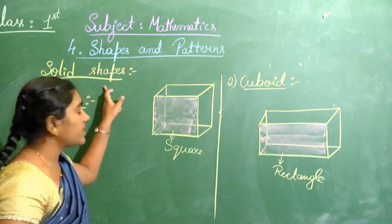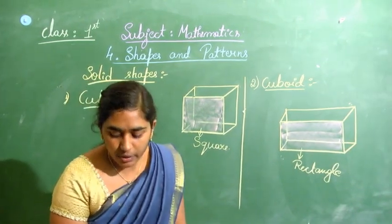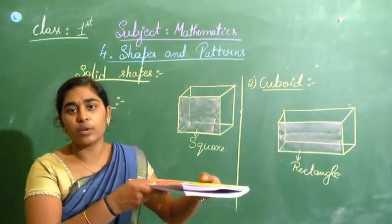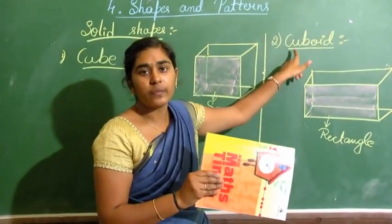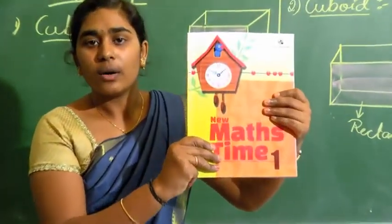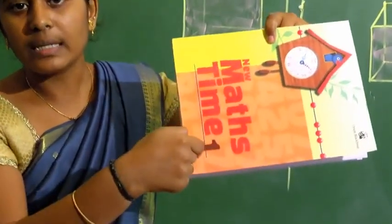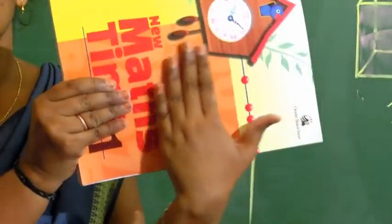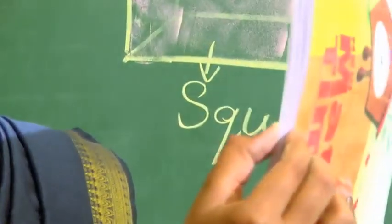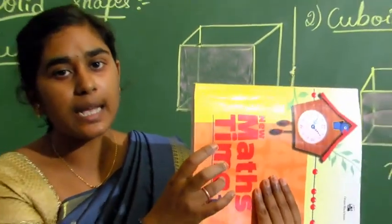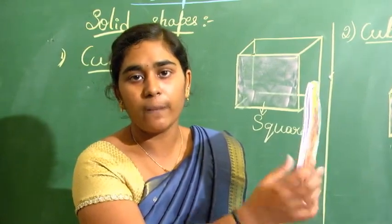These are the solid shapes. We call them solid shapes because they have some thickness. You can take the example of your textbook — this is an example of a cuboid. You can see it has two long sides, two short sides, and also thickness, so a textbook is a cuboid.